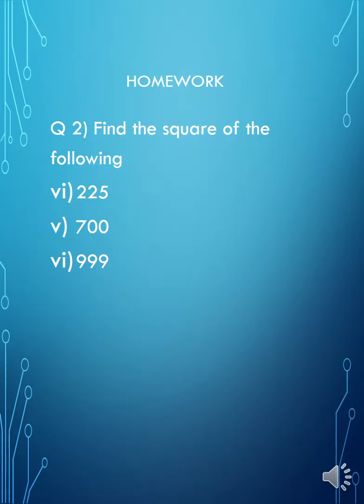Now for homework: find the square of the following numbers — 225 and 799. Multiply each number by itself in your copies and do a lot of practice at home. Okay, thank you and best of luck.